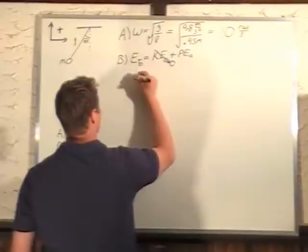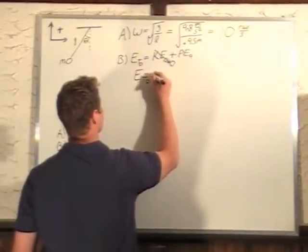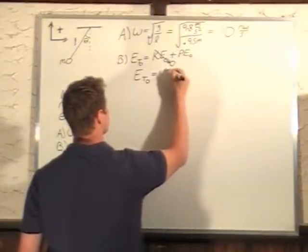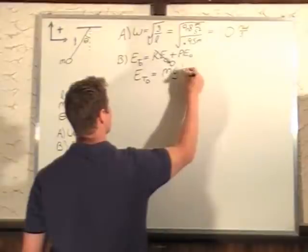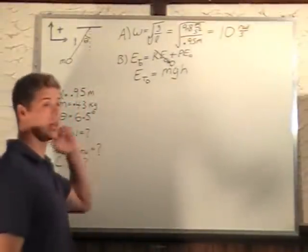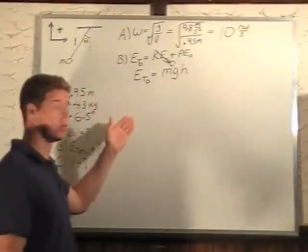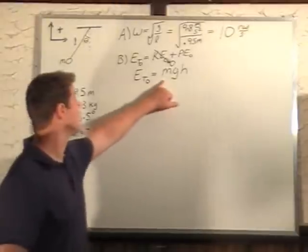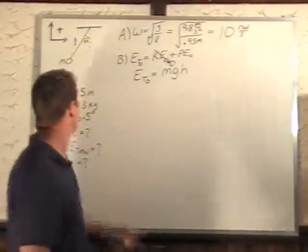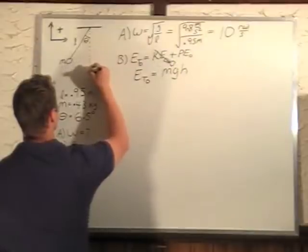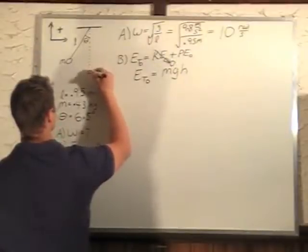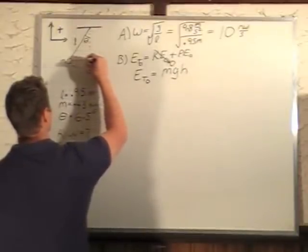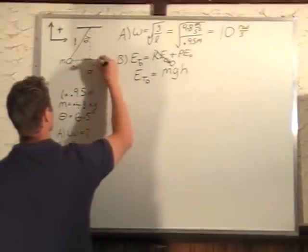Potential energy is mgh, so we can say that our total energy is going to be mgh. That will be the same for the whole time because energy is conserved. What we really need to find is our height.